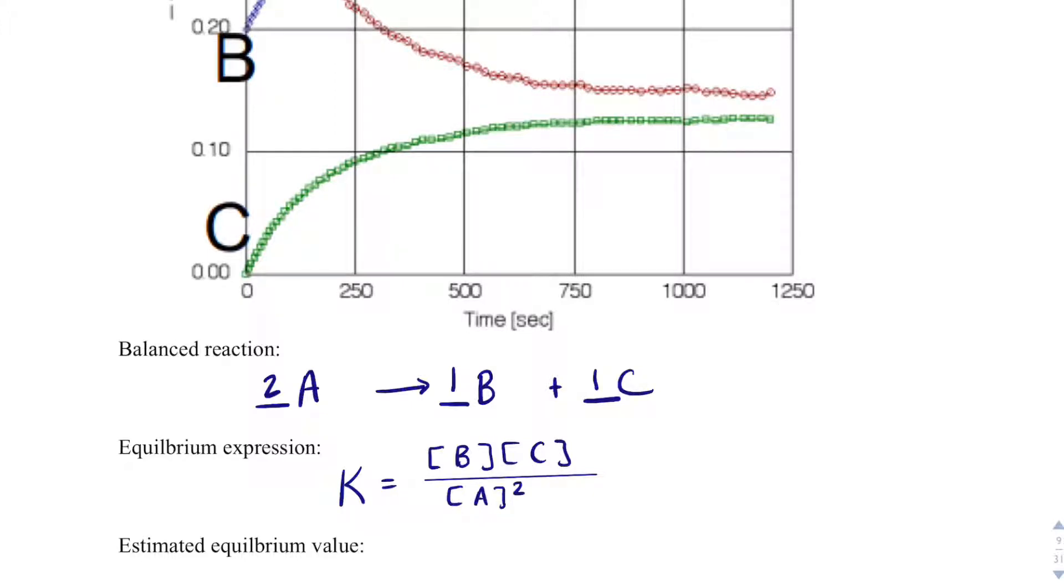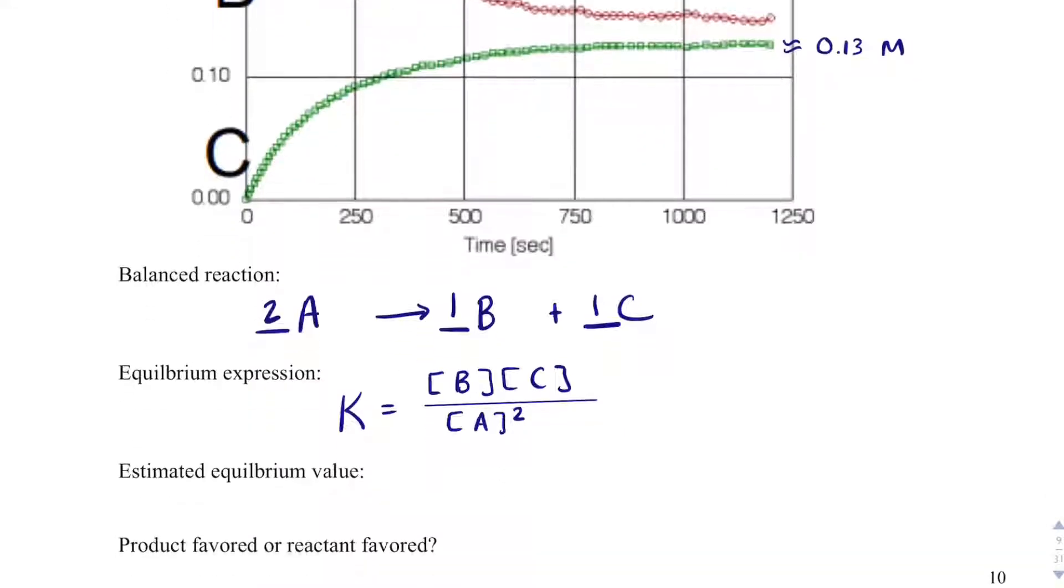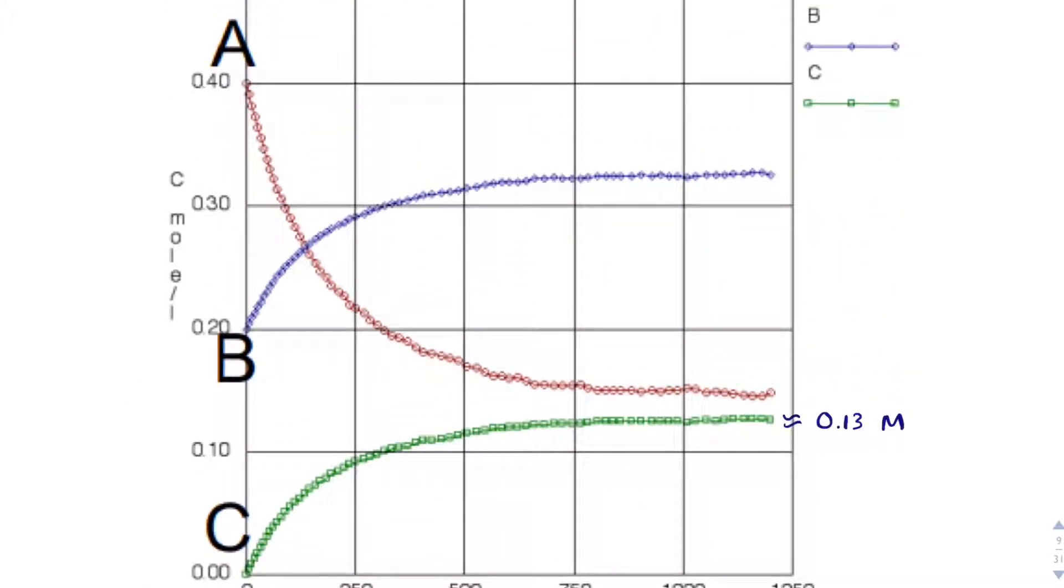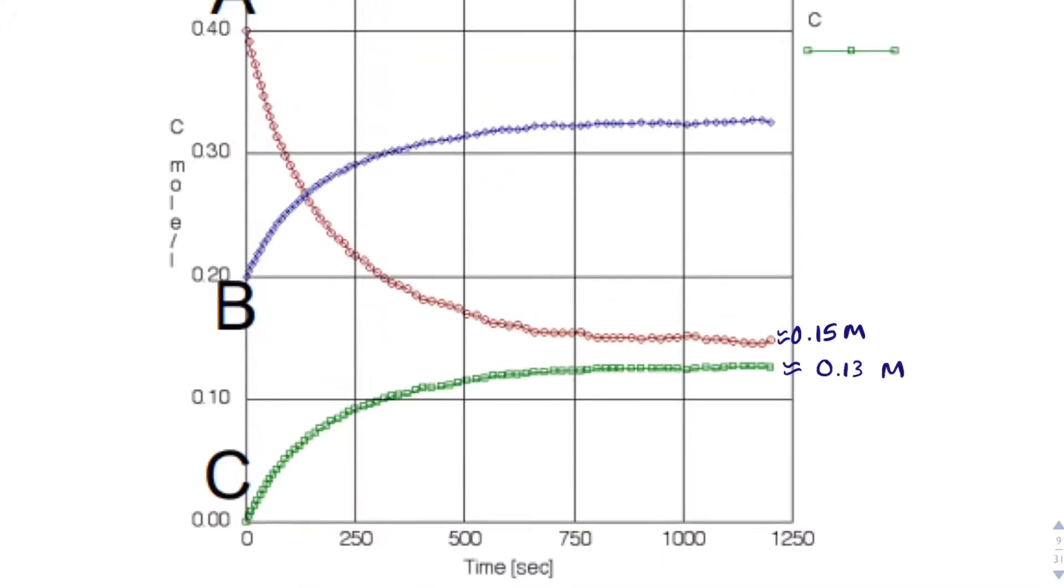To get my estimated equilibrium value, I'm just going to estimate some numbers. So I'll say C is about 0.13 molar, A is about 0.15 molar, and this is just an estimation. And that's squared for A.